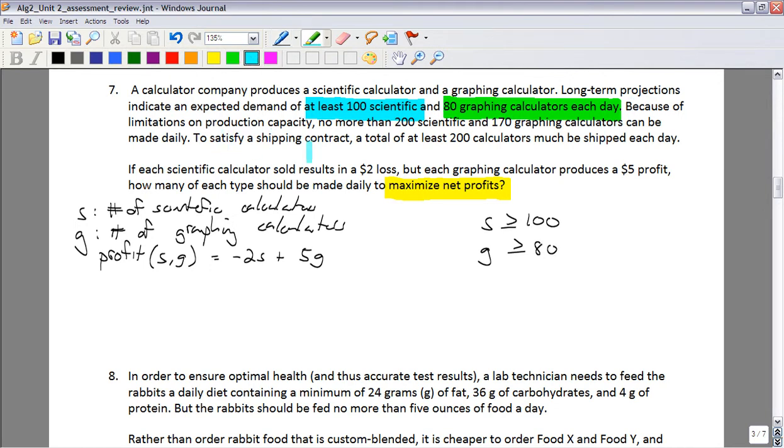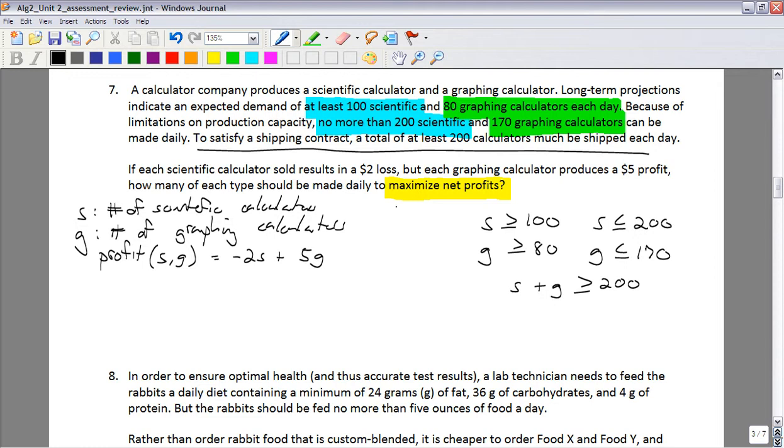They also have some limitations on capacity. No more than 200 scientific. So while scientific is greater than or equal to 100, it's got to be less than or equal to 200. Graphing has to be less than or equal to 170. And then the final constraint says, as far as shipping goes, they've got to ship at least 200 calculators every day. So the number of scientific plus the number of graphing needs to be greater than or equal to 200.